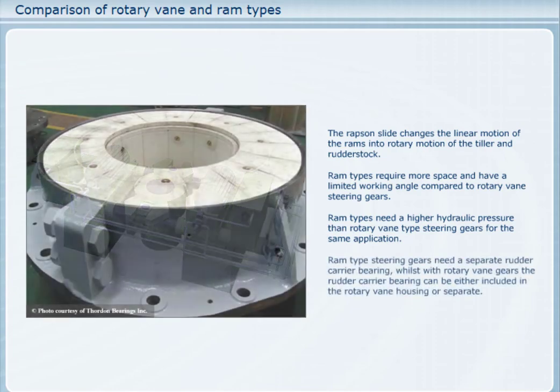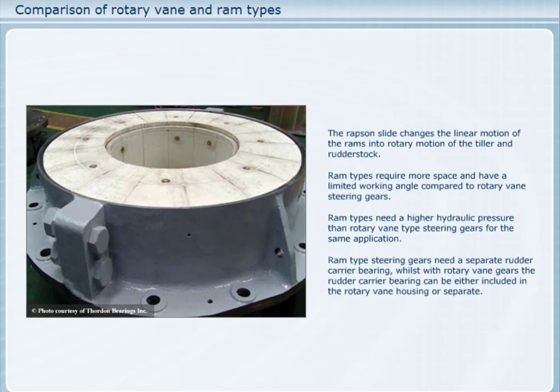Because they are connected to the rudder stock through a moving linkage, ram type steering gears need a separate rudder carrier bearing, whilst with rotary vane gears, the rudder carrier bearing can be either included in the rotary vane housing or separate.